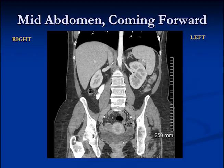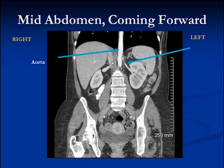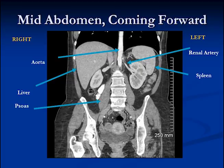If we move a little bit forward into the mid-abdomen, things change again. Here we can see the aorta, which is a retroperitoneal structure sitting behind everything else. We can see the renal arteries going down from the aorta into the kidneys. There's the liver again, there's the spleen, and again these are the psoas muscles on either side.